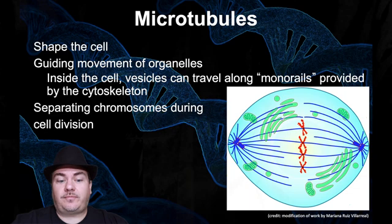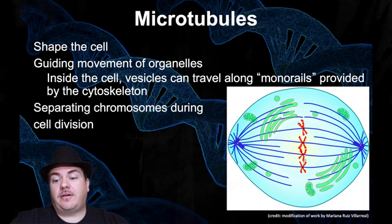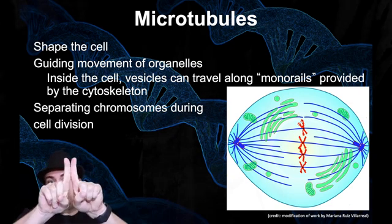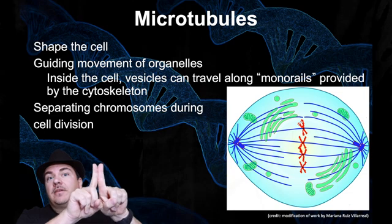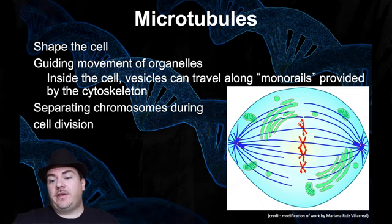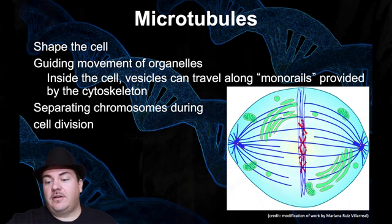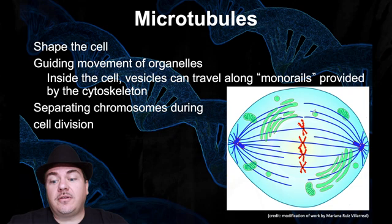Microtubules are also responsible for separating chromosomes during cell division. As a preview: chromosomes line up down the middle of the cell. The X-shaped chromosomes are actually two DNA double helixes attached to each other. Those two double helixes get pulled apart and move to two opposite sides of the cell, because the cell is going to split into two. Half the chromosomes go to each side, and the thing that moves those chromosomes is tubulin microtubules.